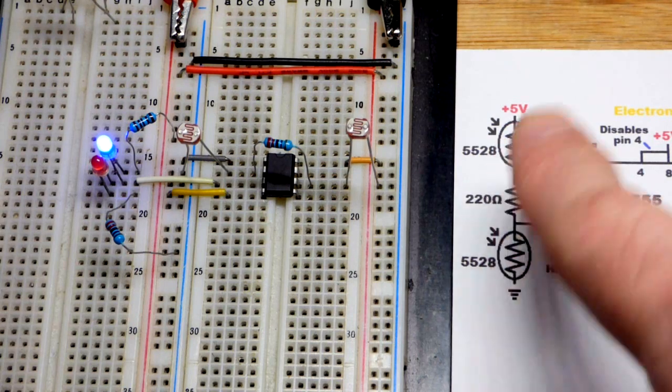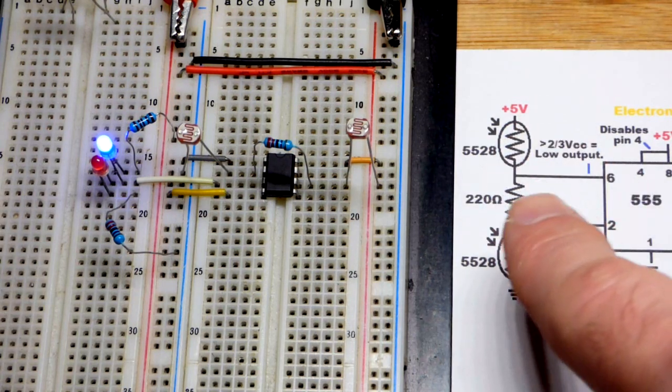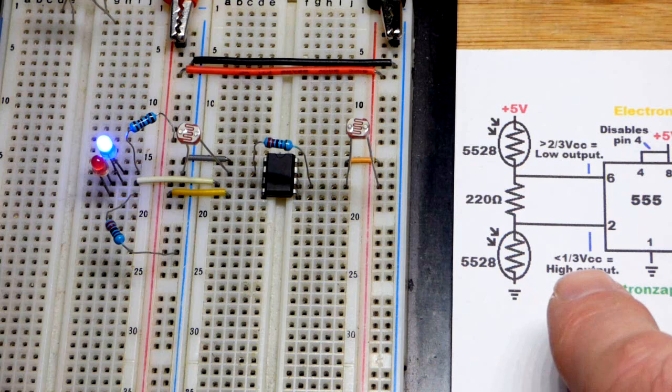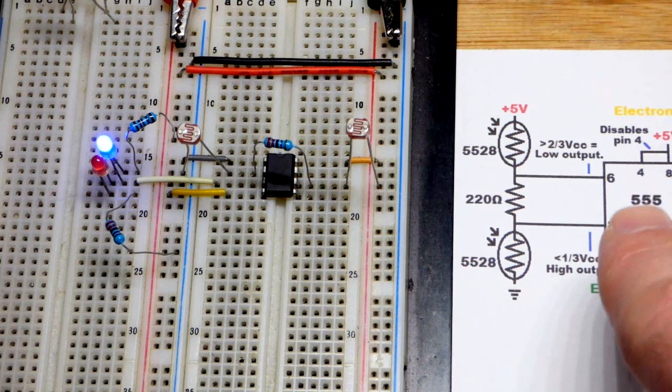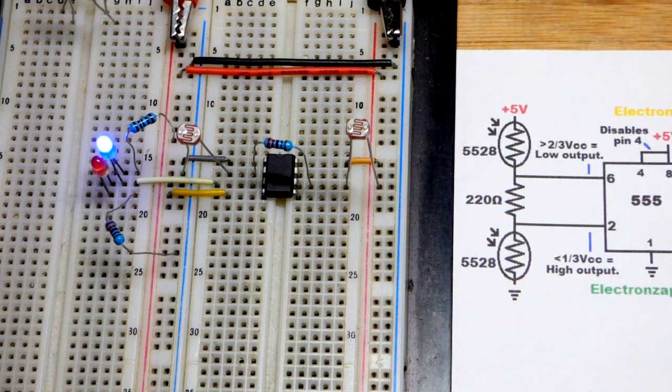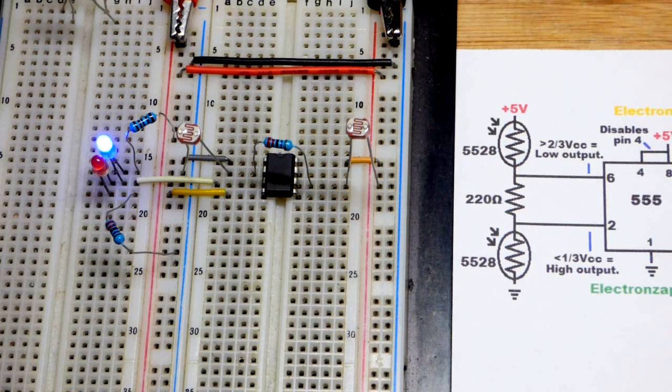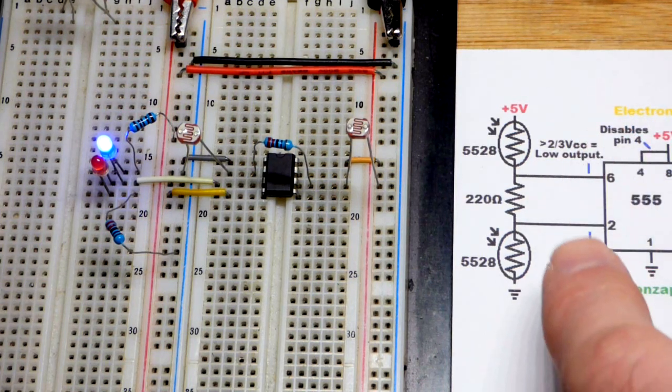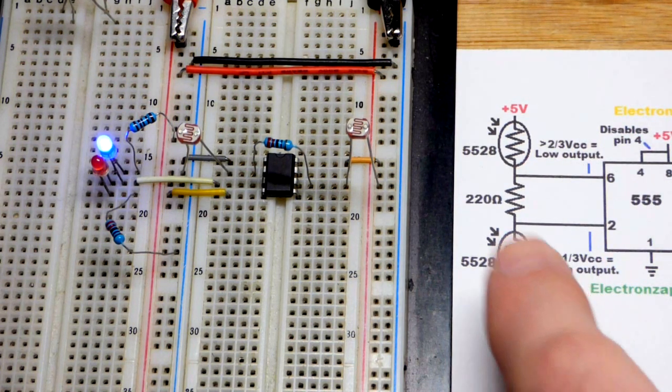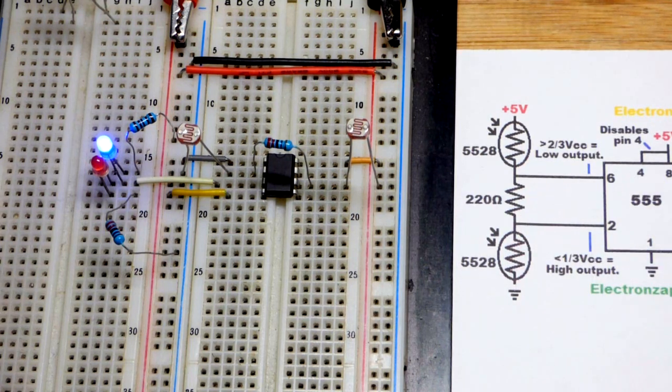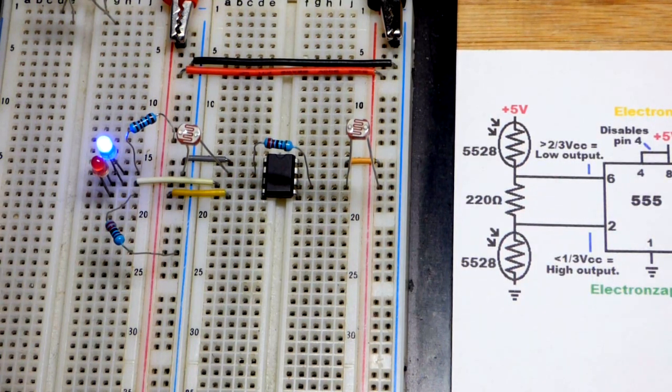Now when we do have light on both of them, we get some middle ground voltage. It falls between 2/3 and 1/3 supply voltage. The 555 timer just ignores the voltage at that point. It either has to go above 2/3 or below 1/3. Otherwise it stays in that middle ground.